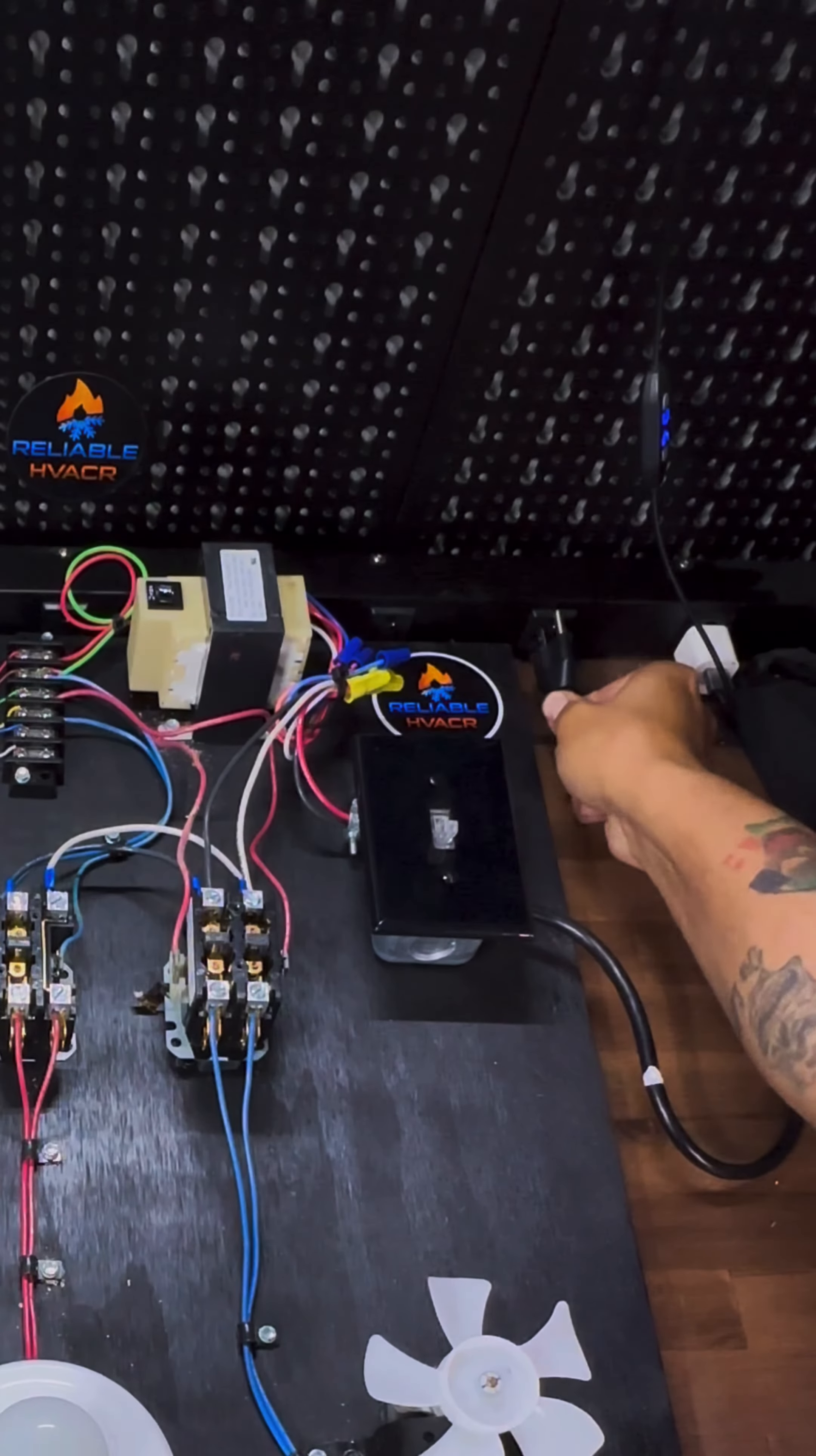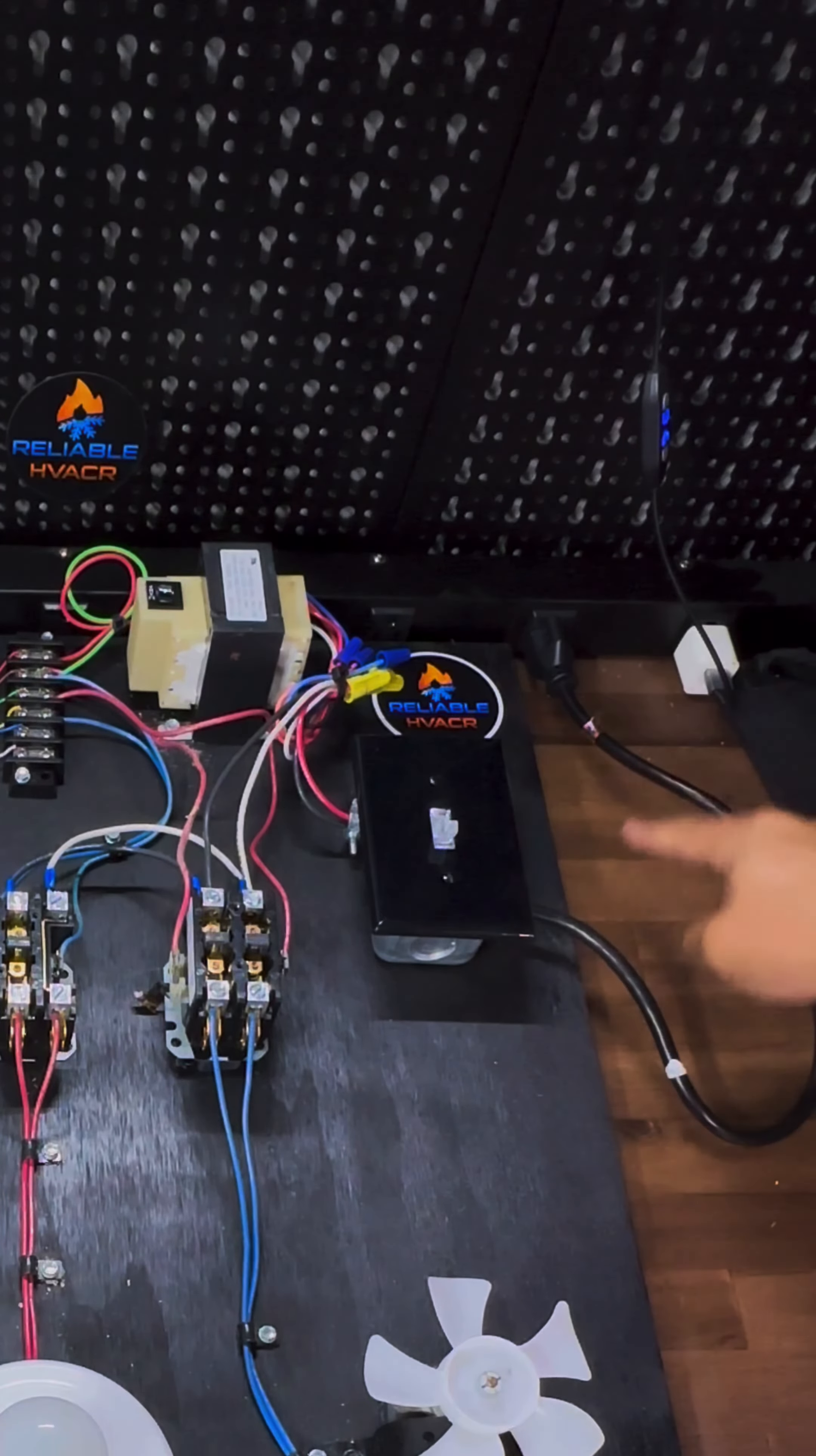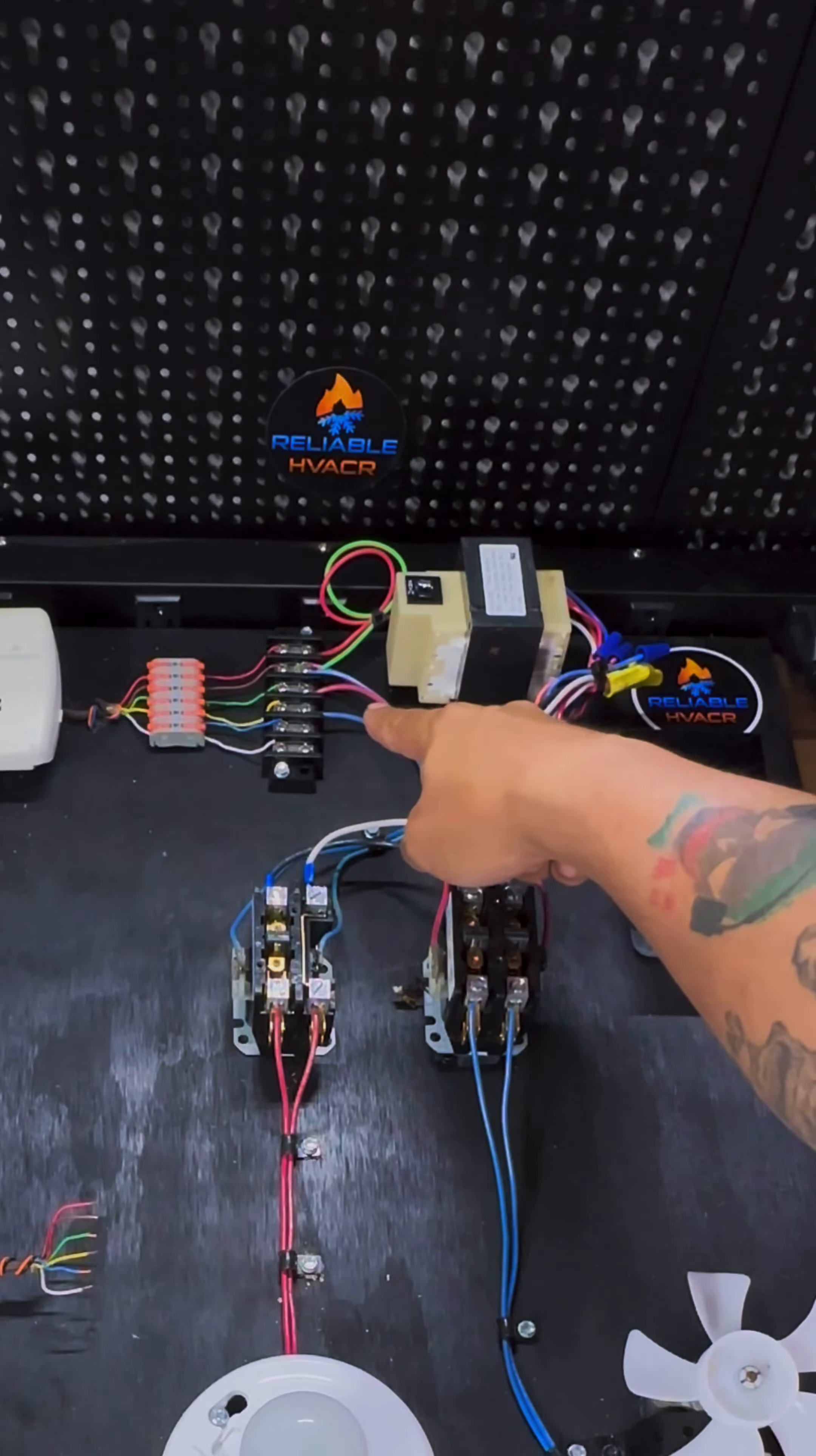Well come on in. All right, so all we have to do is plug this baby in, light comes on, that means it's energized. So we have power coming in going to the transformer, our load side is 24 volts.